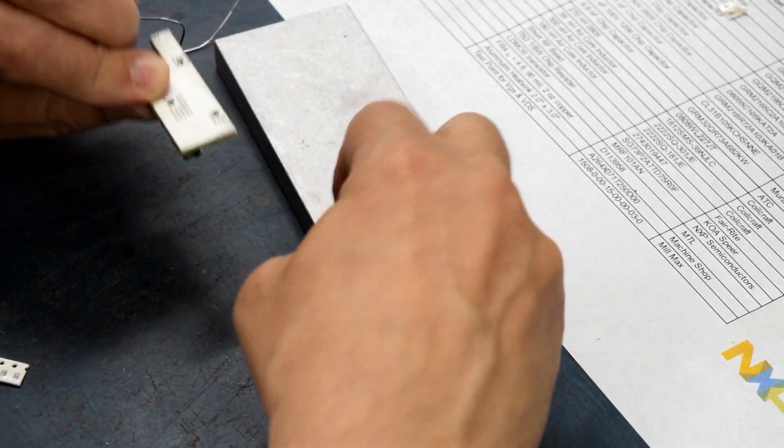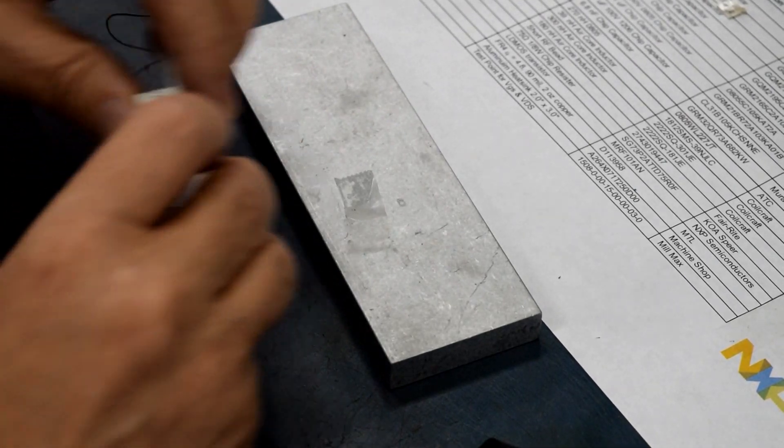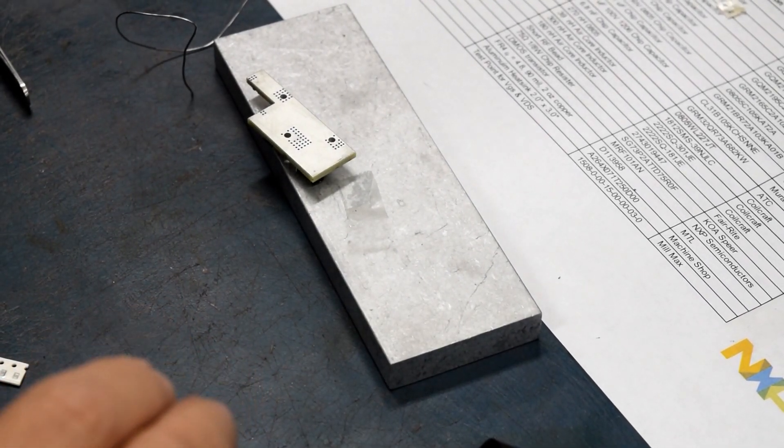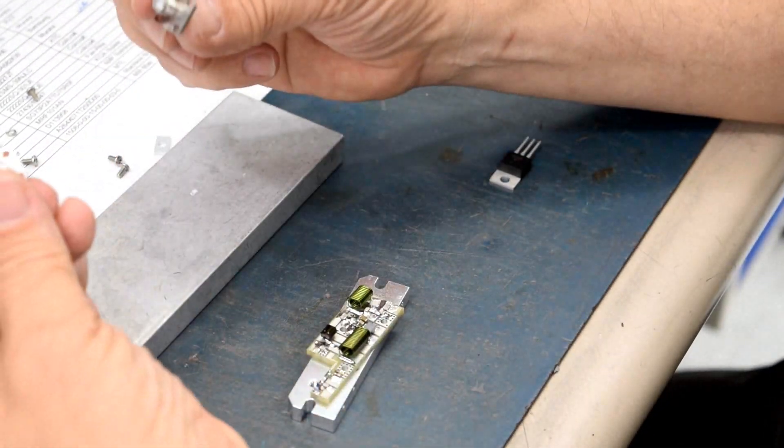So one of the things you want to do is, because you used tape and it did get hot, you want to clean off any residue on the back and double check that no solder has flowed through the vias to the back side.